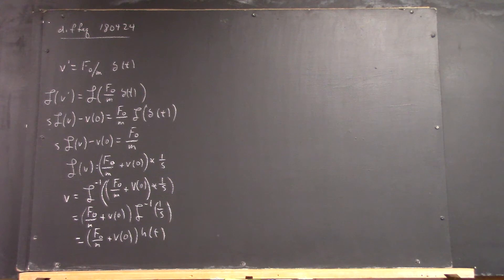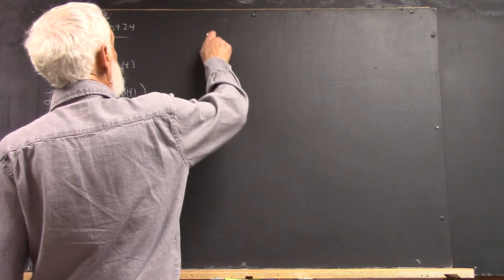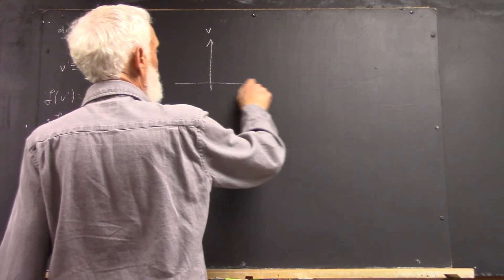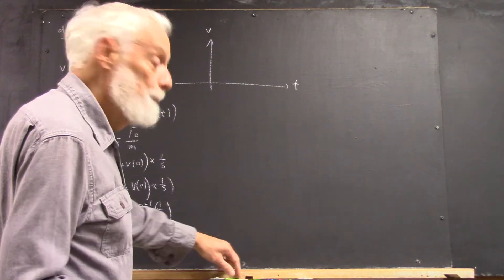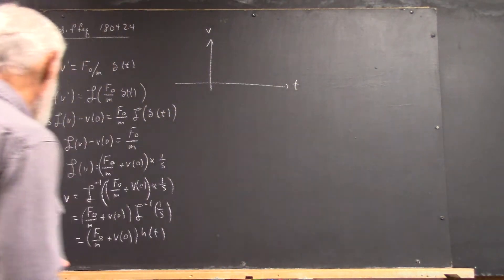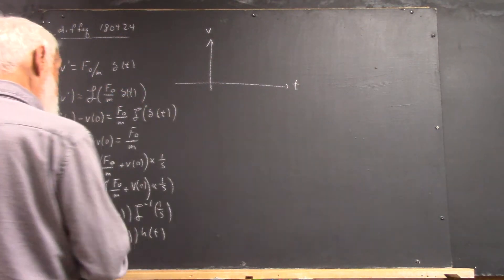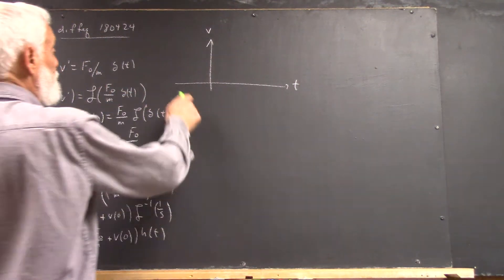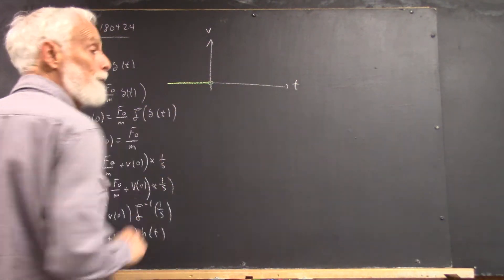Now if we graph that, it's very simple. Here's your velocity, here's time. Up to t equals 0, the Heaviside function is 0, so any multiple of the Heaviside function is 0. So we have this.